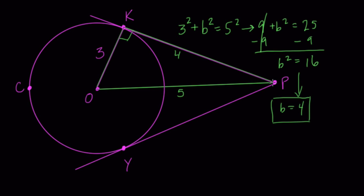Now, if you have two tangent lines that meet at the same point, they're of equal length. So this line here is also 4. Hope that helped.